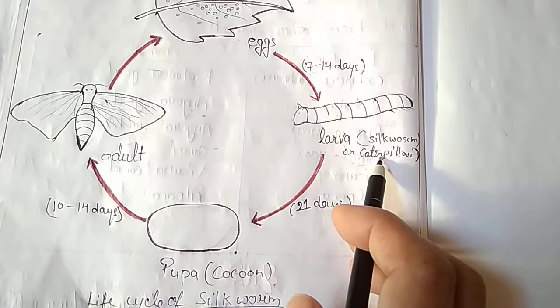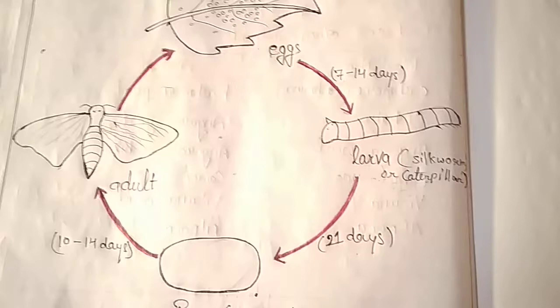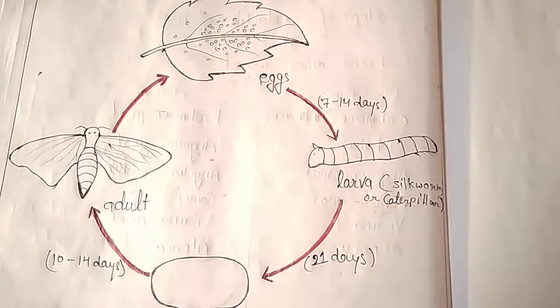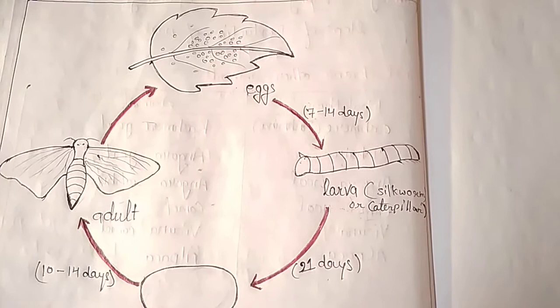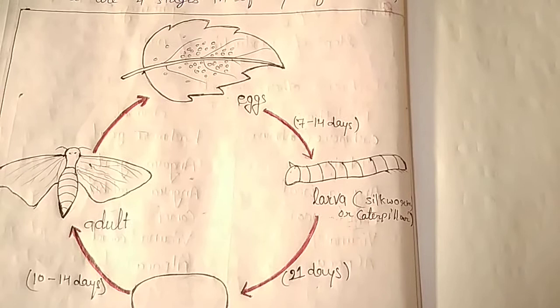The caterpillar in the larval stage eats and eats, feeding on mulberry leaves, and sheds its skin four times. This shedding of skin is known as molting. The larva first builds a web around itself to support its body, then starts secreting fine protein filaments which harden on exposure to air to spin a cocoon around itself. The larva at this stage is called the pupa, and silk fibers are obtained from this cocoon.